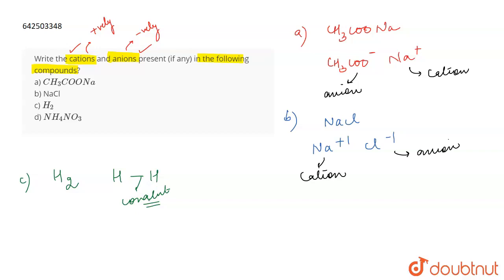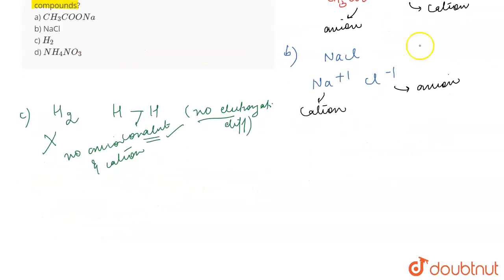There is no electronegativity difference. For cation and anion to exist, there has to be an electronegativity difference and there has to be electrostatic forces of attraction. But here they have weak Van der Waals forces of attraction. The bonds formed are covalent and there is no electron negativity difference, so it does not contain any cation or anion.